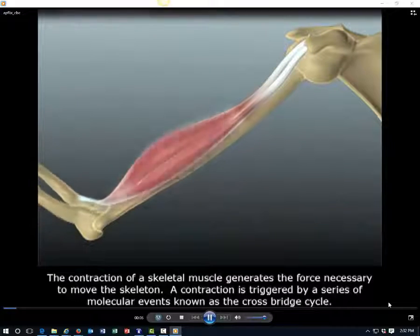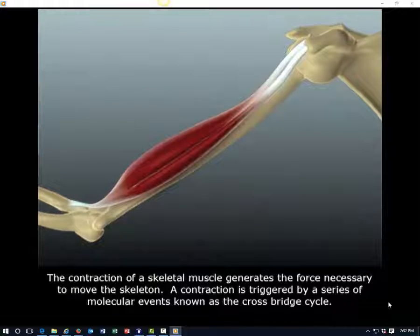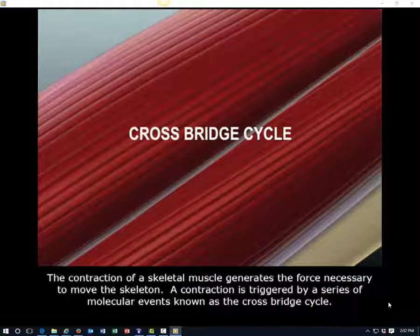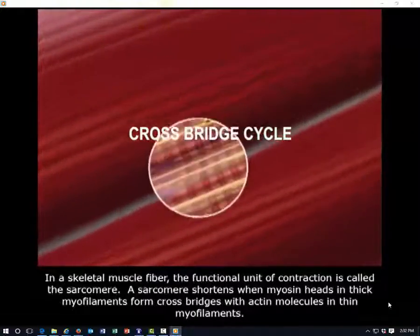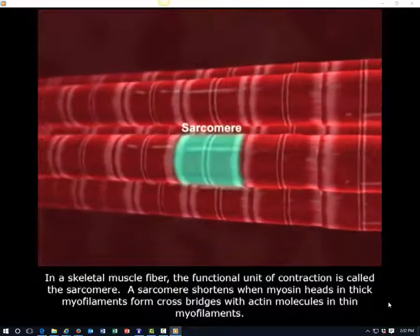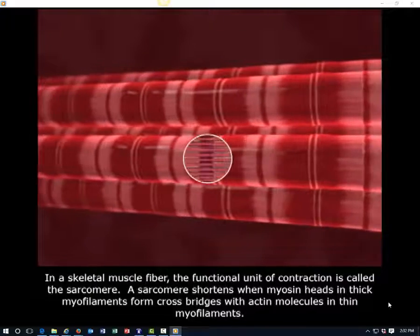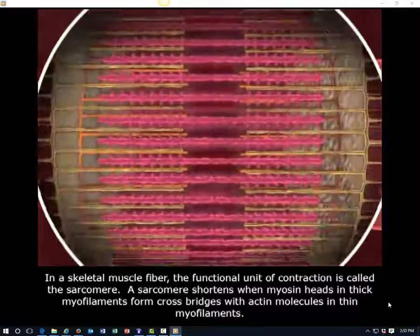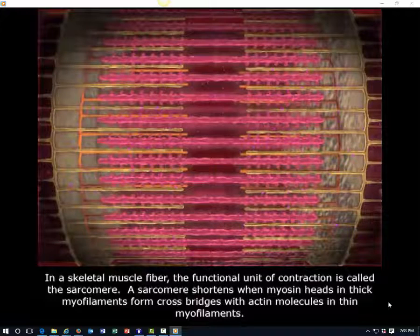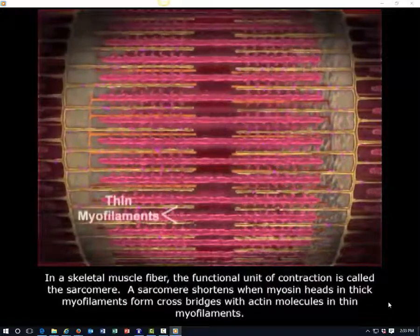The contraction of a skeletal muscle generates the force necessary to move the skeleton. A contraction is triggered by a series of molecular events known as the cross-bridge cycle. In a skeletal muscle fiber, the functional unit of contraction is called the sarcomere. A sarcomere shortens when myosin heads in thick myofilaments form cross-bridges with actin molecules in thin myofilaments.